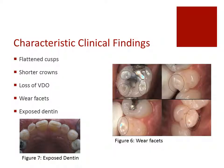Now we're going to talk about some characteristic clinical findings that you'll note with attrition, some of which being flattened cusps, shorter crowns, loss of vertical dimension of occlusion, wear facets, and exposed dentin. In more severe cases of attrition, the enamel may be completely ground away, exposing the dentin underneath. This may lead to some sensitivity. Dentin, once exposed, will wear more rapidly and be more prone to staining.